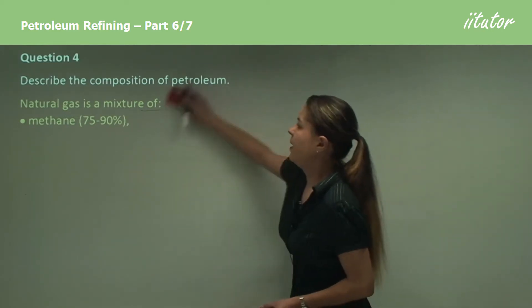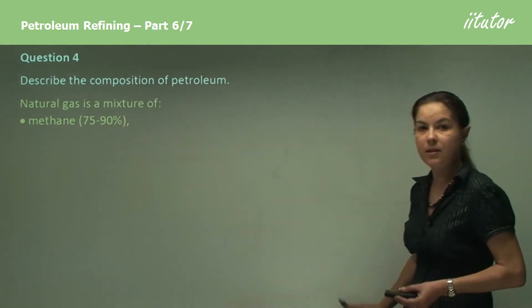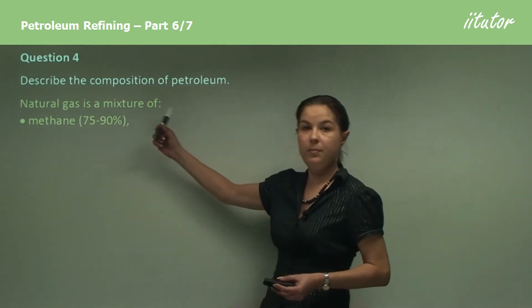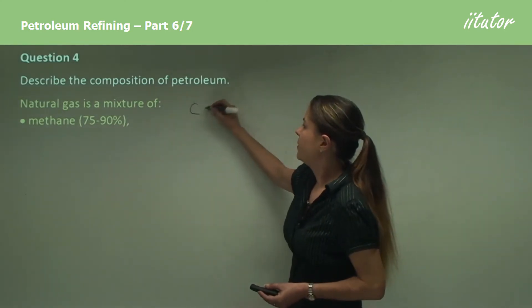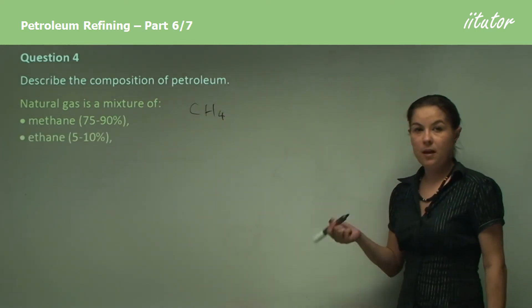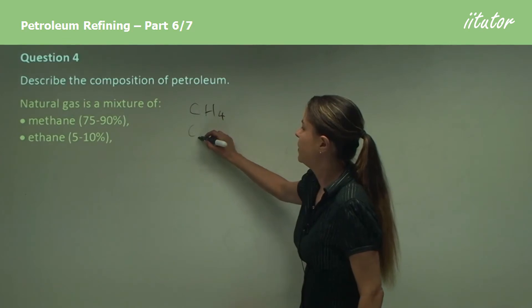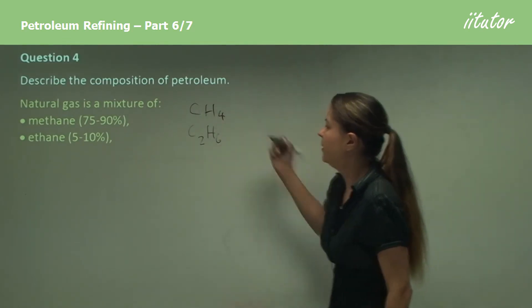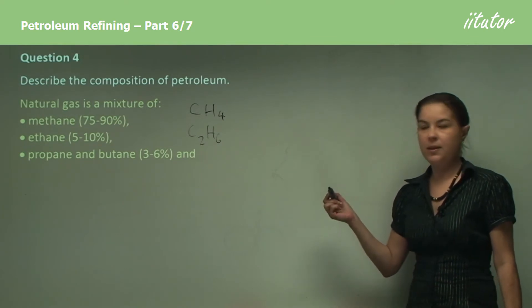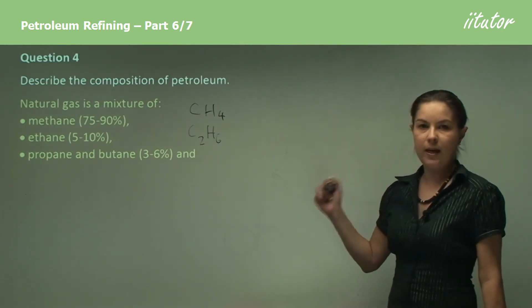Now natural gas, on the other hand, the majority of natural gas is made up of methane gas, which is between 75 and 90%, and methane is CH4. It also contains some ethane, 5 to 10%, which is C2H6, and a little bit of propane and butane, 3 to 6%, which is C3 and C4.